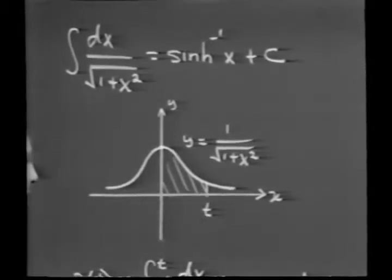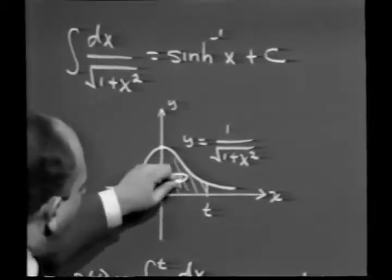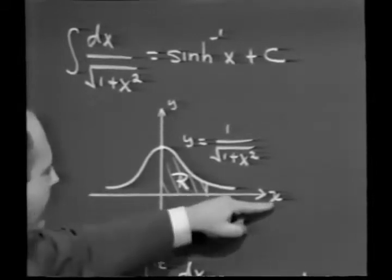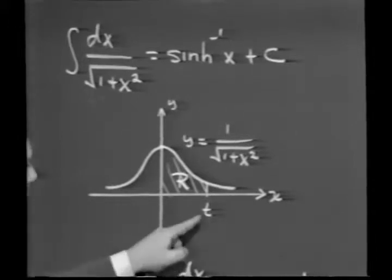At any rate, I have a picture like this. And now suppose I want to find the area of the region R where R is bounded above by this curve, below by the x-axis, on the left by the y-axis, and on the right by the line x equals t.